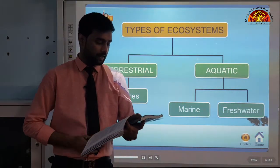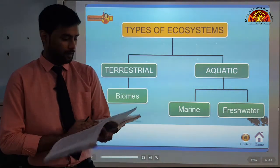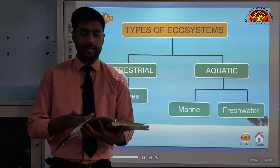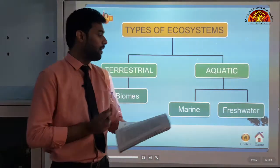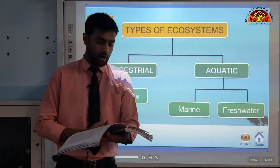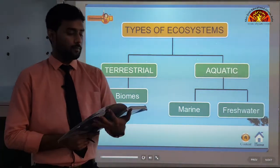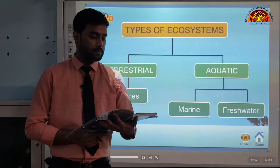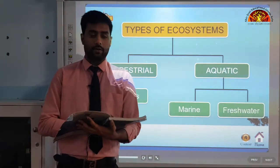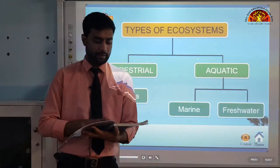Aquatic systems can be classified as marine and freshwater biomes. Marine ecosystems include oceans, estuaries and coral reefs, where the water will be salty. Freshwater systems include lakes, ponds, streams, marshes and bogs.